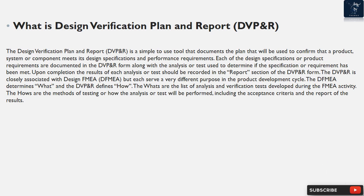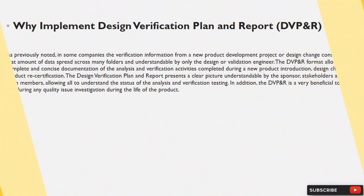The DVP&R is closely associated with design FMEA, but each serves a very different purpose in the product development cycle. The DFMEA determines the 'whats,' and the DVP&R defines the 'hows.' The whats are the list of analysis and verification tests developed during the FMEA activity. The hows are the methods of testing — how the analysis or test will be performed — including the acceptance criteria and the report of the results.